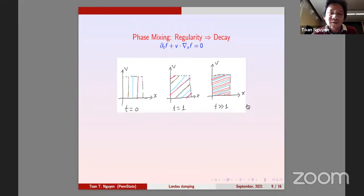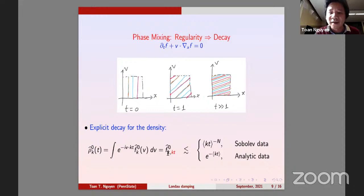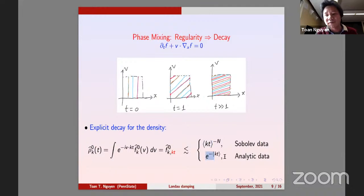Phase mixing gives no decay for f itself but decay for the average, since averaging in v you see no dependence in x. Explicitly in Fourier — where k is i dx — the exact solution for free transport is that the integral in v is exactly the Fourier transform in x and v evaluated at k and kt. If the initial data is Sobolev meaning f_0 decays polynomially in v, you get polynomial decay. If the initial data is analytic, it decays exponentially.